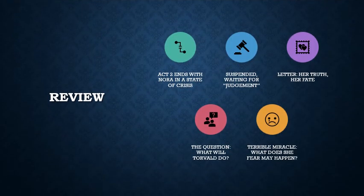So let's do a brief review of what we've talked about so far. Act 2 ends with Nora in a state of crisis and a split between a superficial expression of joy and happiness and her inner despair and expectation of doom. She's suspended, waiting for judgment, waiting to find out what's going to happen. The letter contains this judgment — it tells her truth — and once it is opened by Torvald, it will determine her fate. She's waiting for the message to be delivered, facing the question: what will Torvald do? What will his reaction be? And that is intimately related to the notion of the terrible miracle — the thing she hopes yet fears will happen.